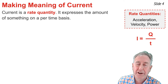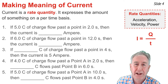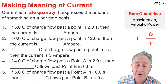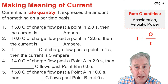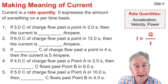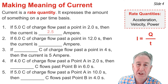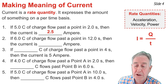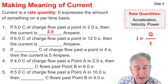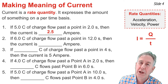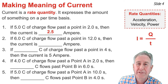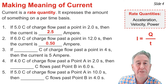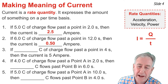Let's gain some familiarity with this equation to complete the following five word statements. In the first, five coulombs of charge flow past a point in two seconds. The current is Q per T, five divided by two, coulombs divided by seconds, which gives us 2.5 amperes. In the second question, six coulombs of charge flow past a point in 12 seconds. The current is Q per T, six coulombs divided by 12 seconds, and that's 0.5 coulombs per second, or 0.5 amperes.